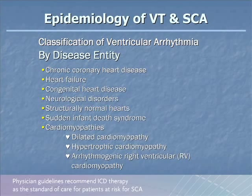In terms of epidemiology, people at risk include those with coronary heart disease, heart failure, congenital heart disease. Some people with neurologic disorders have an increased tendency toward sudden cardiac death, some via bradyarrhythmias. There are people with structurally normal hearts, sudden infant death syndrome in the very young, and the cardiomyopathies — dilated cardiomyopathy perhaps from a virus, hypertrophic cardiomyopathies, and syndromes like arrhythmogenic right ventricular cardiomyopathy where normal heart tissue gets replaced with fibrosis and fat.